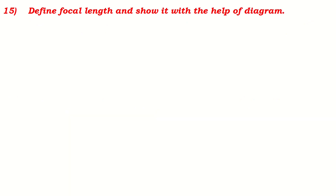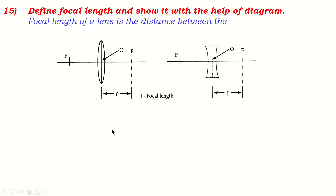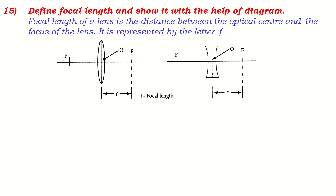Define focal length and show it with a diagram. The distance from the optical center to the focus of the lens is the focal length. This distance can be measured on both sides of the lens and is equal on both sides. Focal length of a lens is the distance between the optical center and the focus of the lens. It is represented by small f — don't be confused: small f is for focal length, but capital F is for focus.